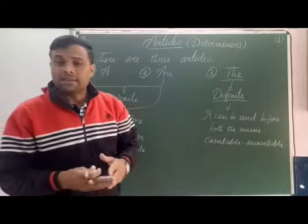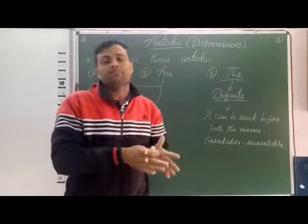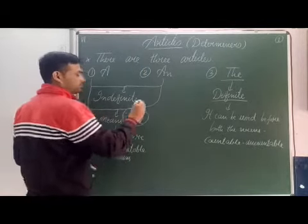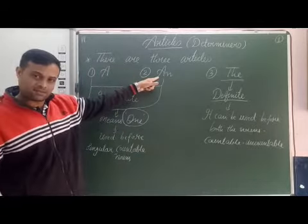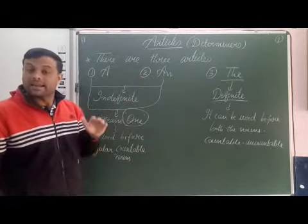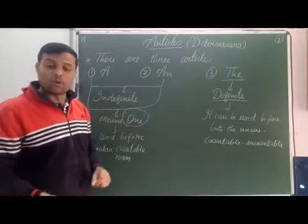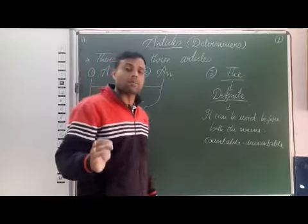Students, the meaning of articles a and an is one. The meaning of a or an, it means one, and that is why these two articles are used before singular countable nouns.